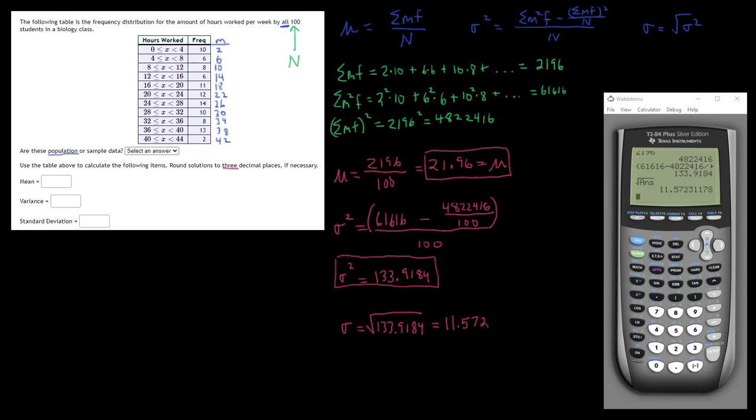And there is our standard deviation. Again we want to be really careful to round this to three places, 11.572. So just to recap, we calculated the midpoint of each class, we then calculated the sum of the M times F's, the sum of the M squared F's, and the sum of the M F's squared, and then we simply substituted into these formulas and rounded appropriately. This was the mean, variance and standard deviation of grouped quantitative data.